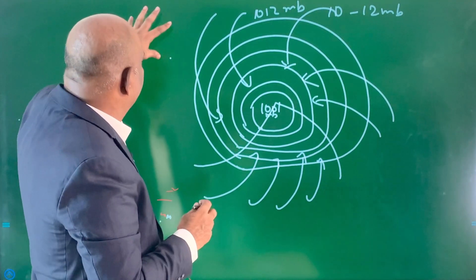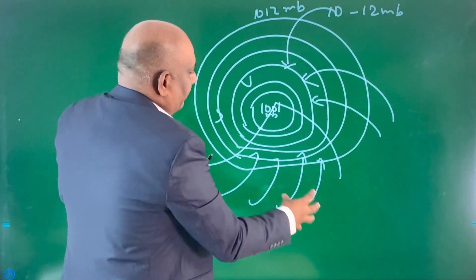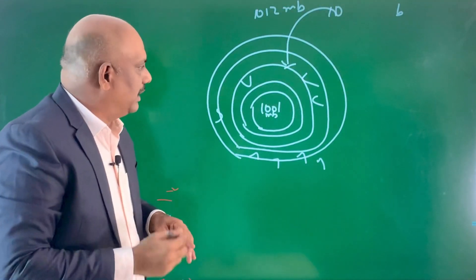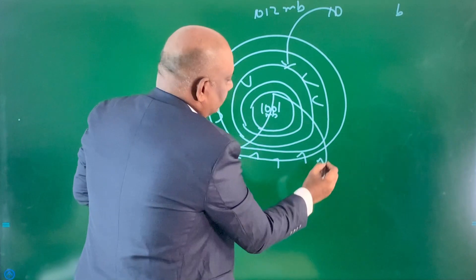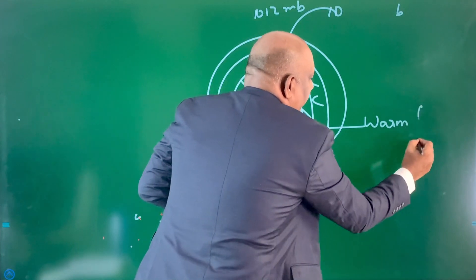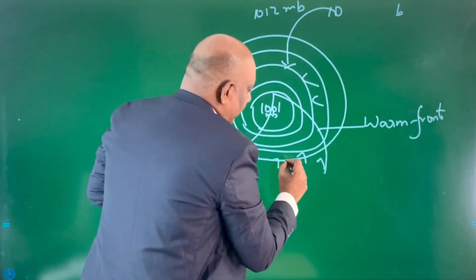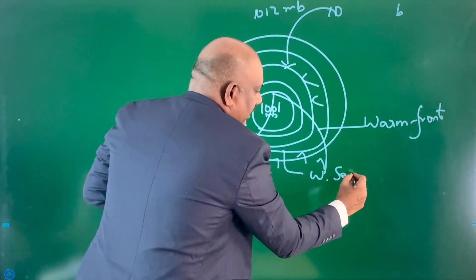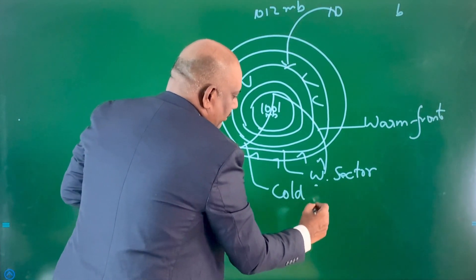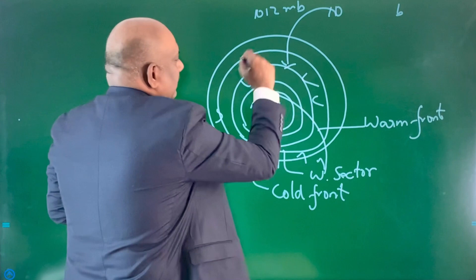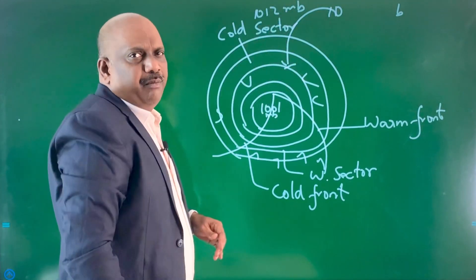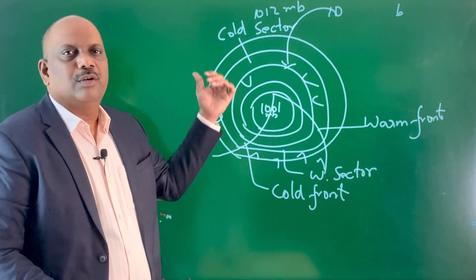There are four distinct regions inside a temperate cyclone: the warm front, the warm sector, the cold front, and the cold sector.